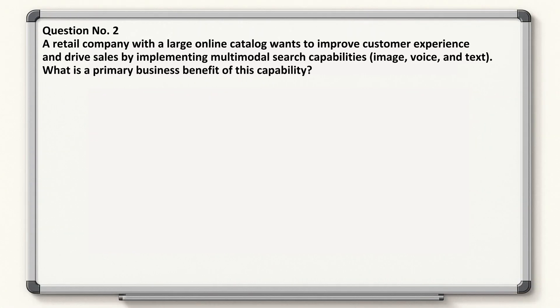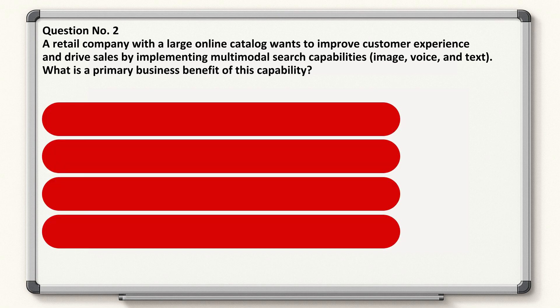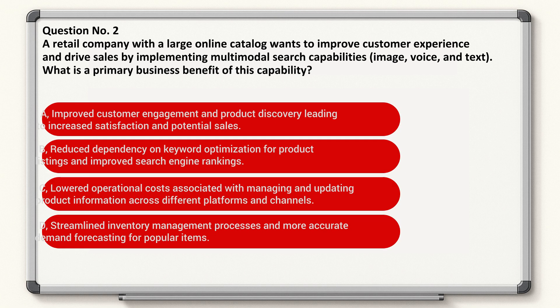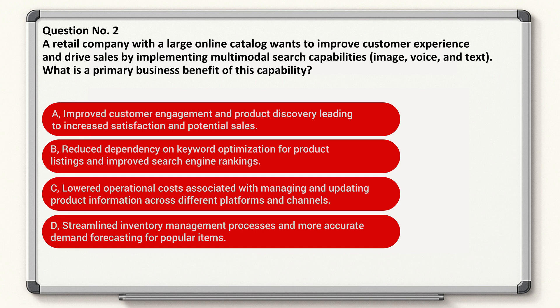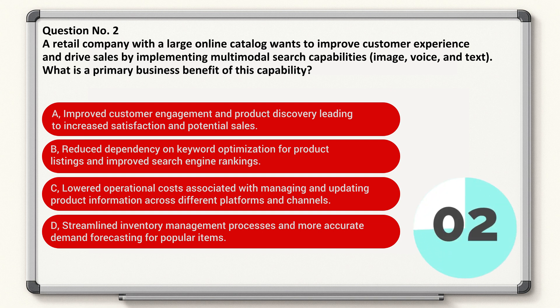Question number two: a retail company with a large online catalog wants to improve customer experience and drive sales by implementing multimodal search capabilities — image, voice, and text. What is a primary business benefit of this capability? Correct answer is D.